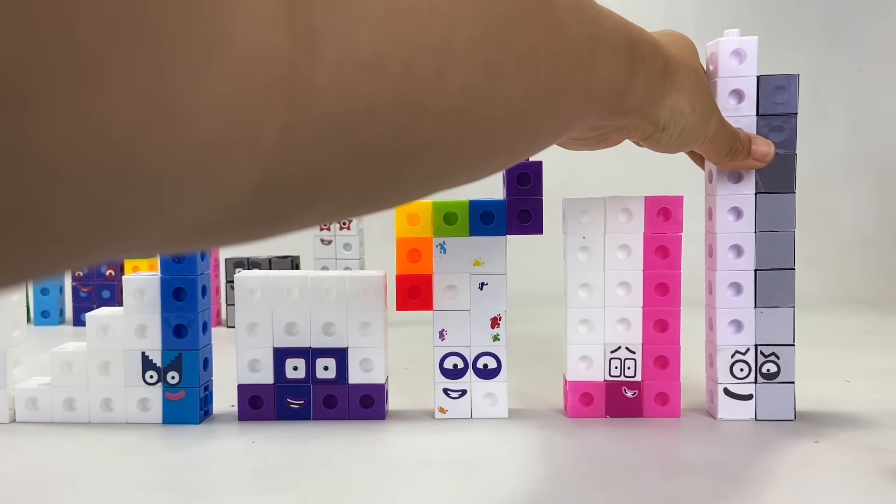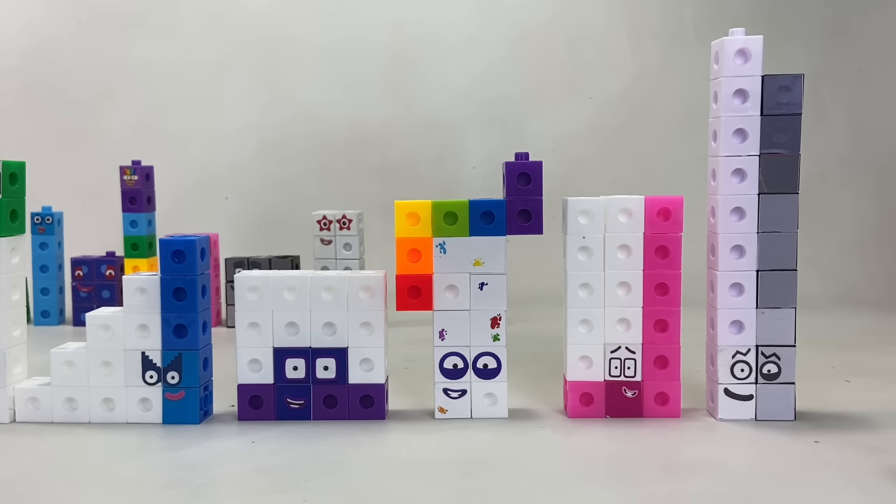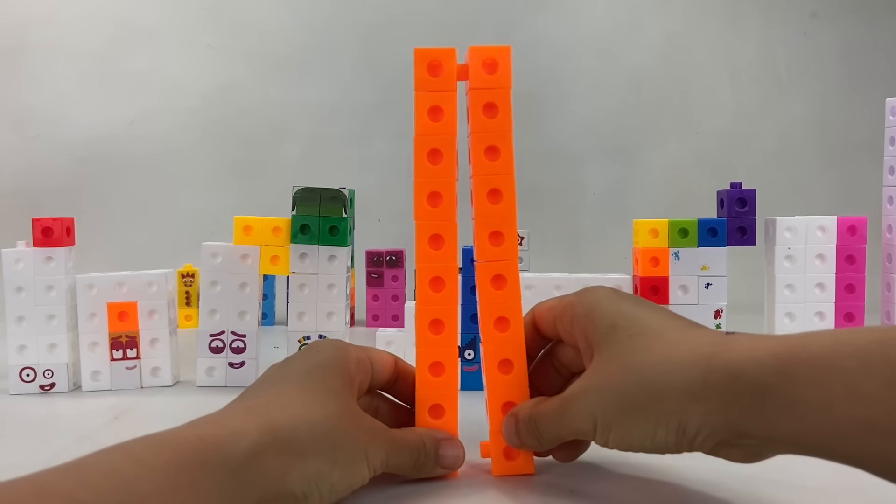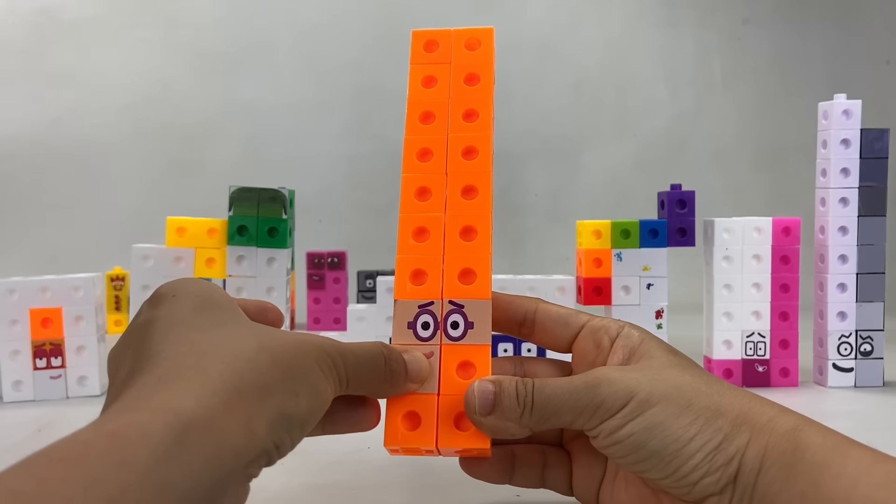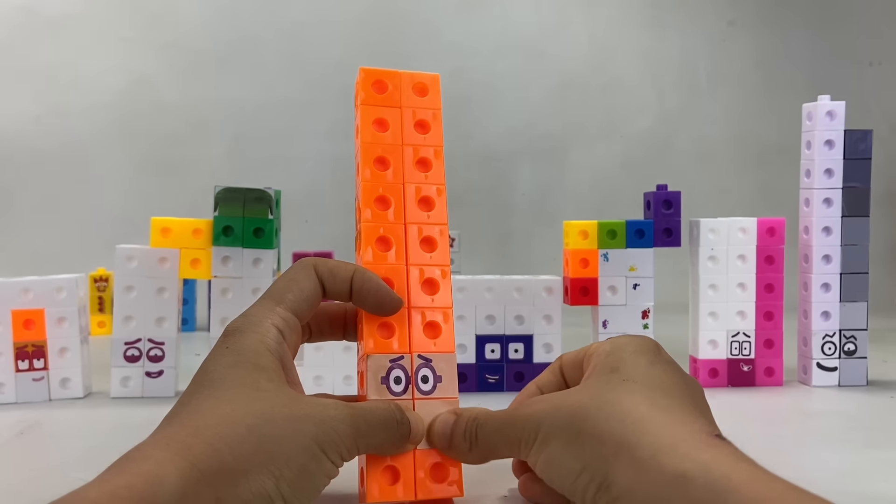Number Block 19! And now it's time to build Number Block 20! He's made up of 20 light orange blocks! So we'll use light orange stickers!